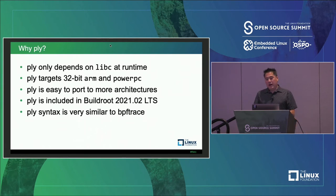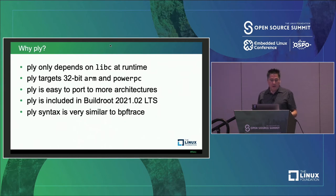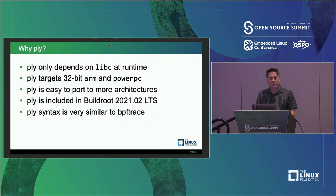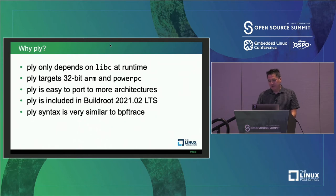Why Ply? Ply has minimal dependencies — only libc at runtime. It can target 32-bit ARM and PowerPC, which are common in embedded products. And because it's written in C, not C++, it's easier to port to more architectures. It is included in Buildroot as of the February LTS release this year, so adding it is trivial. Its syntax is also very similar to BPF Trace, as we'll see.